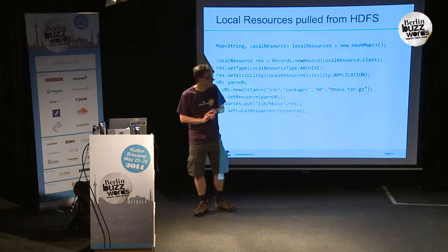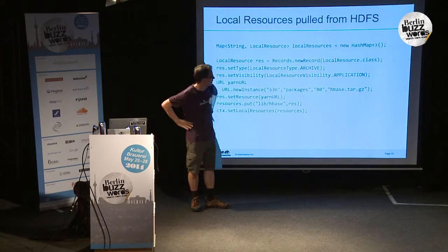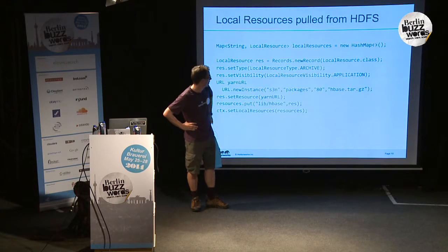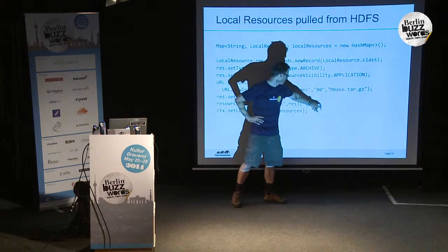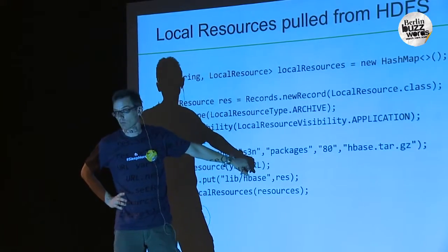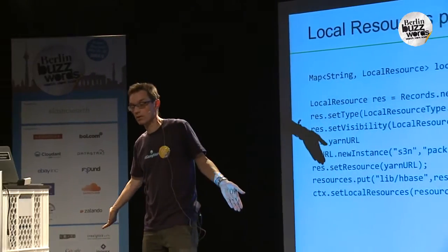One of the interesting things is: where do your binaries come from? The answer is you copy all the artifacts you want to run into HDFS, or any other file system that Hadoop can grab. Here's an example where I'm saying I want to download an HBase tarball, but we're going to pick it up from an Amazon S3 URL. It's a URL that Hadoop can handle, and it will quite happily do this. If you're playing with YARN on an Amazon EMR cluster, you can keep all your binaries on S3 and pull them down on demand.